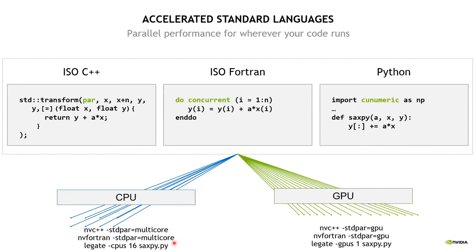Our goal with accelerating the standard languages is that you can take the same code — whether C++, Fortran, or even Python — and be able to run it across your CPUs or your GPUs. For the compiled languages, I simply had to change one compiler flag in order to retarget the code. And using the Python code, you can see you can scale it across CPUs or GPUs as well.